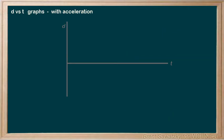So, what does a d vs t graph look like when there is acceleration? Well, if there's acceleration, there's a change in velocity, which means the slope must change, which means it can't be linear.